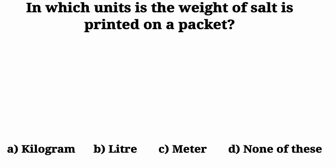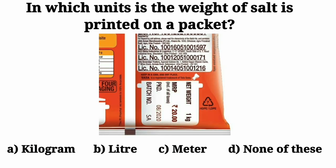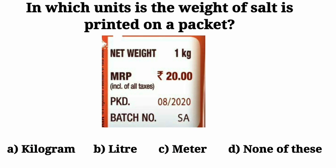Here we have a picture of a packet salt. We will look at it and find the correct answer. You can see that at the back side of the packet, the net weight is printed on this packet. And the net weight mentioned here is 1 kg. Kg stands for kilogram.